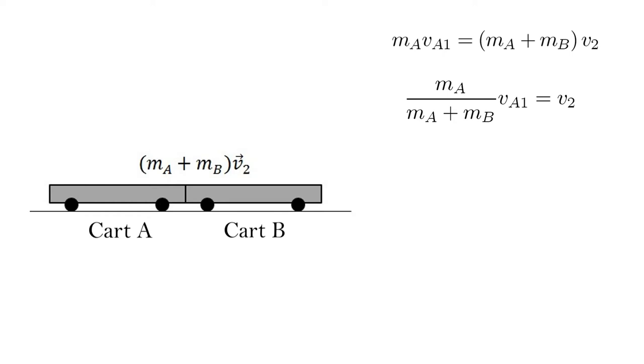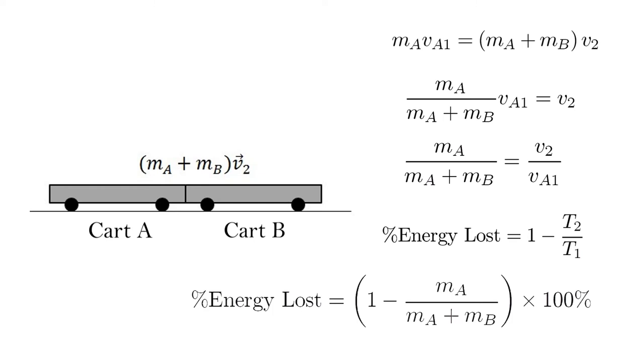Also, we can compute the ratio of the final velocity to the initial velocity in terms of the masses alone. Using kinetic energy, we can also calculate the percent energy loss of the collision in terms of simply the mass.